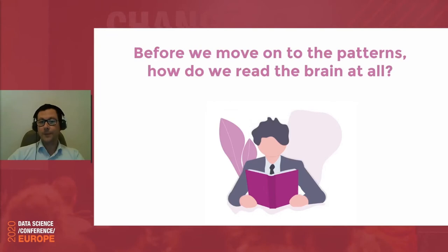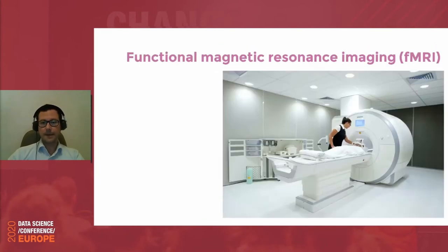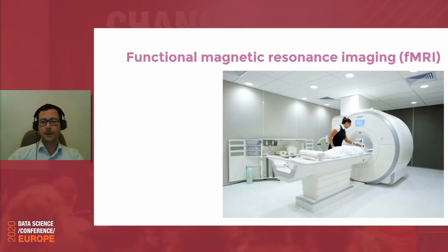How do we read the brain at all? Let me spend a few moments to explain. There are three most common and frequently used techniques. One is functional magnetic resonance imaging. When your brain is active in a certain area, there is more oxygen in that area. fMRI uses this principle to see when and what brain area is active and make conclusions from that. However, it's very cumbersome, with good spatial resolution but very low temporal resolution.